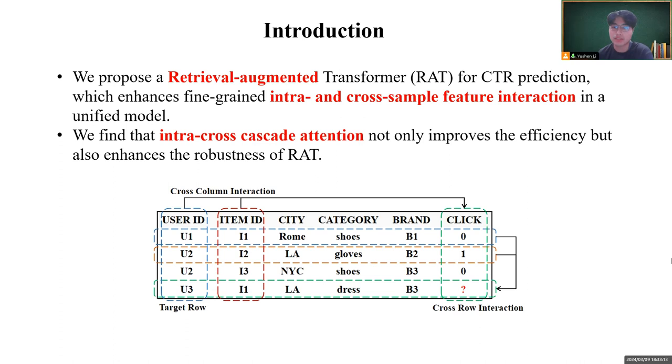Traditional CTR prediction methods only focus on cross-column interaction. In this paper, we focus on a new paradigm of Retrieval Augmented CTR, further incorporating cross-sample interaction for more effective prediction.